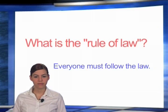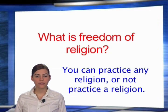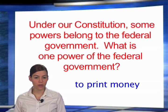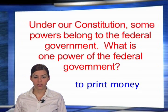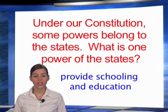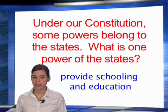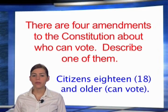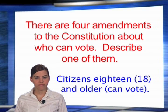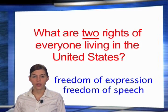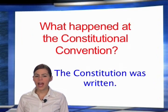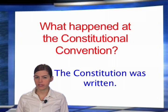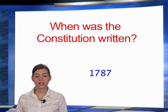How many amendments does the Constitution have? What is the rule of law? What is freedom of religion? Under our Constitution, some powers belong to the federal government — what is one power of the federal government? Under our Constitution, some powers belong to the states — what is one power of the states? There are four amendments to the Constitution about who can vote; describe one of them. What are two rights of everyone living in the United States? What happened at the Constitutional Convention? When was the Constitution written?